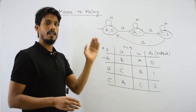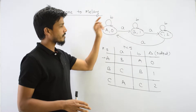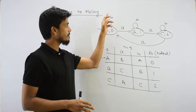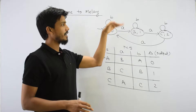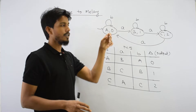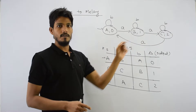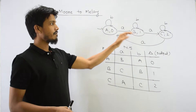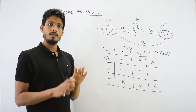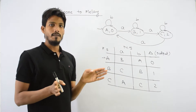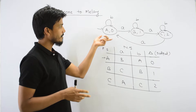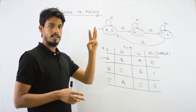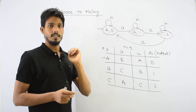But what about the Mealy machine? In the Mealy machine, the output is associated with the transition, not the state. The output here is state-wise. So if we convert it to a Mealy machine, there is no difference in the states — the number of states is 3, so the Mealy machine also has 3 states.